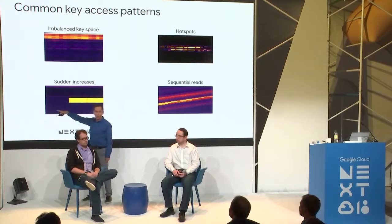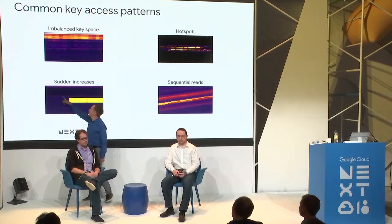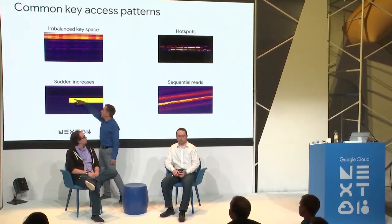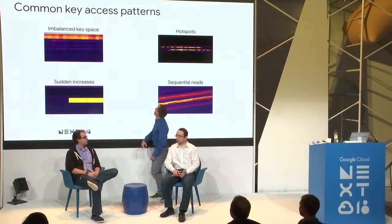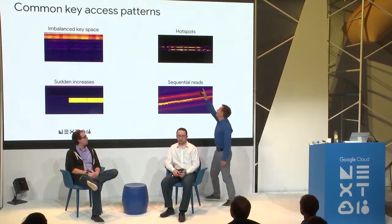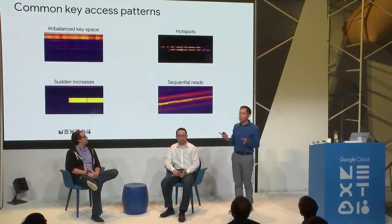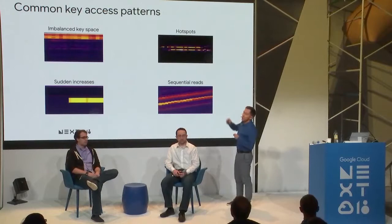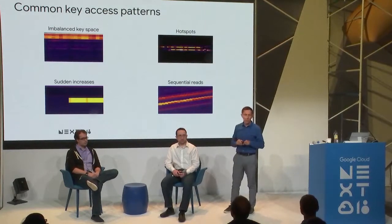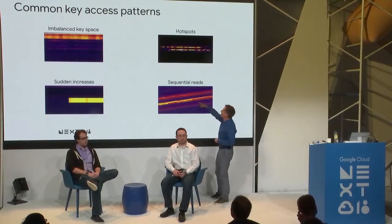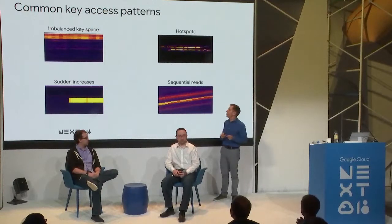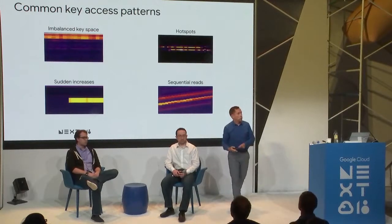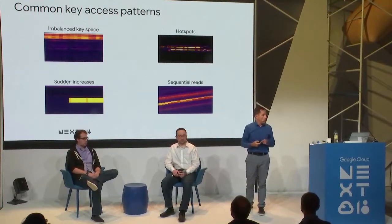In another pattern example, your database could be cold across the whole key spectrum, then suddenly show a sharp increase for a specific key range at a particular time. Another example shows nearly everything cold except for a few glowing white keys — that's a couple of hot spots. And then there's the diagonal line, which is the same example from before — probably a sequential read caused by a MapReduce job.